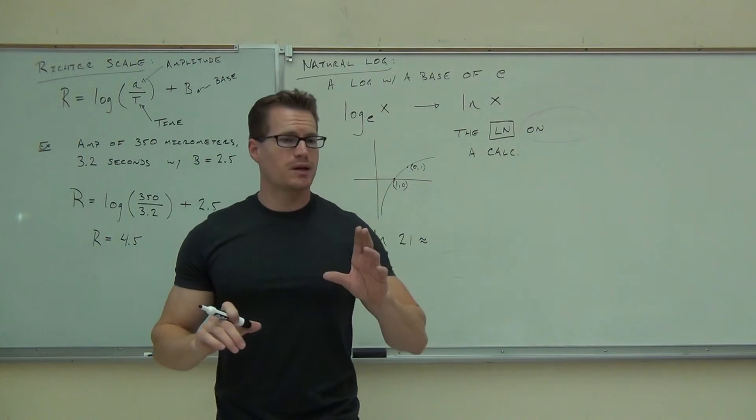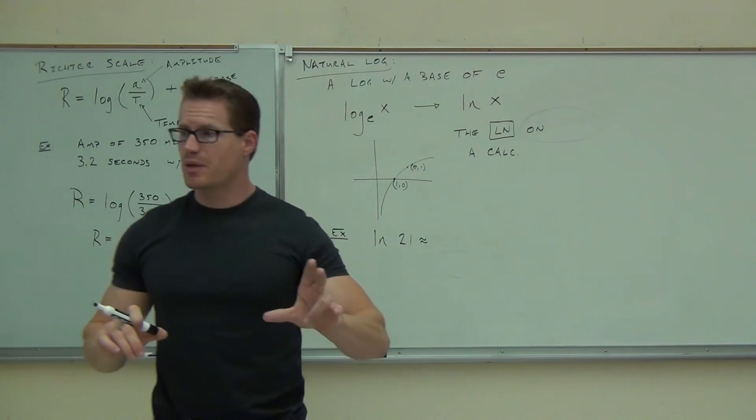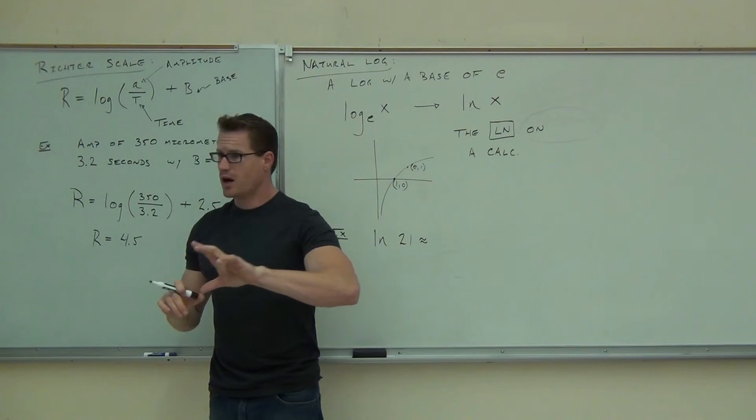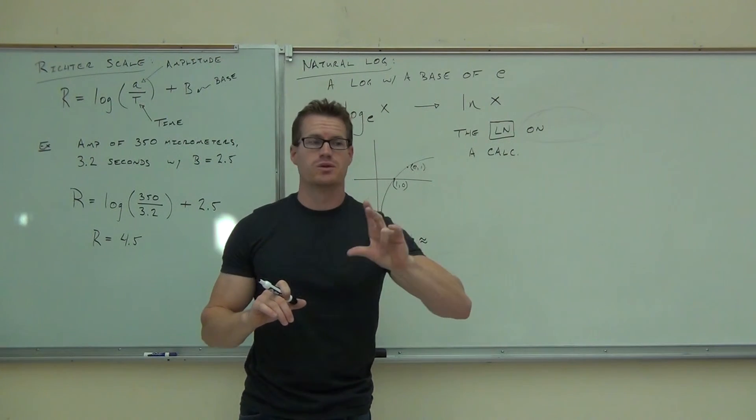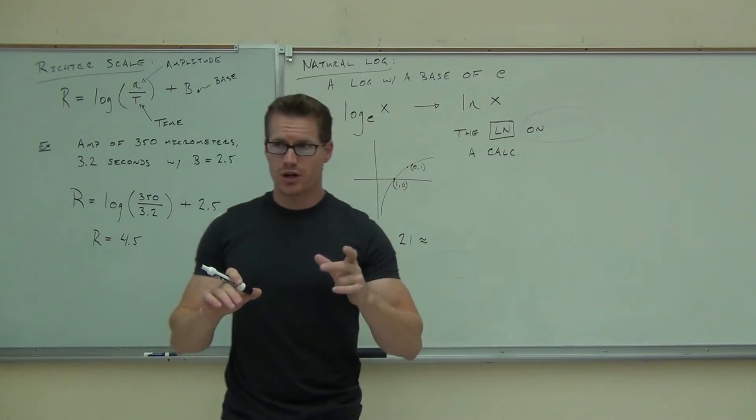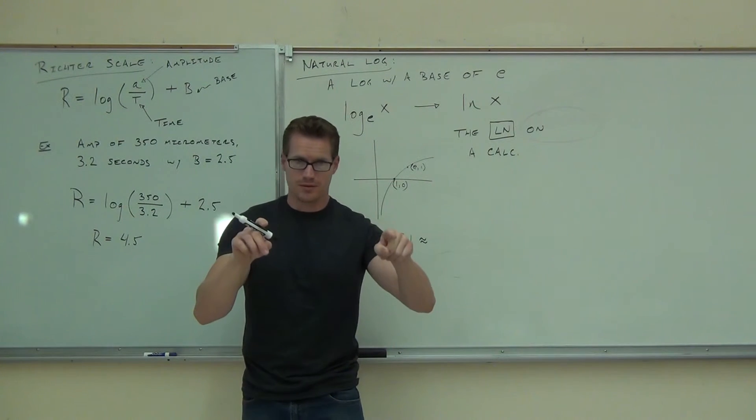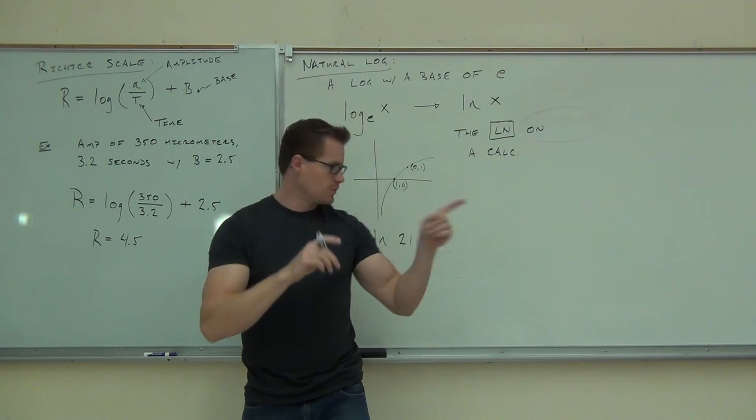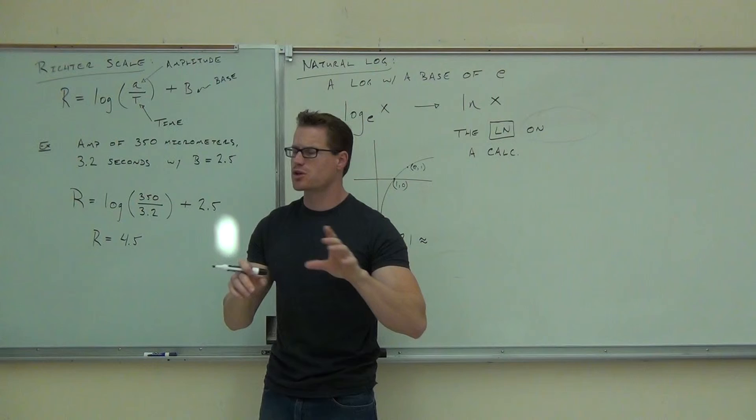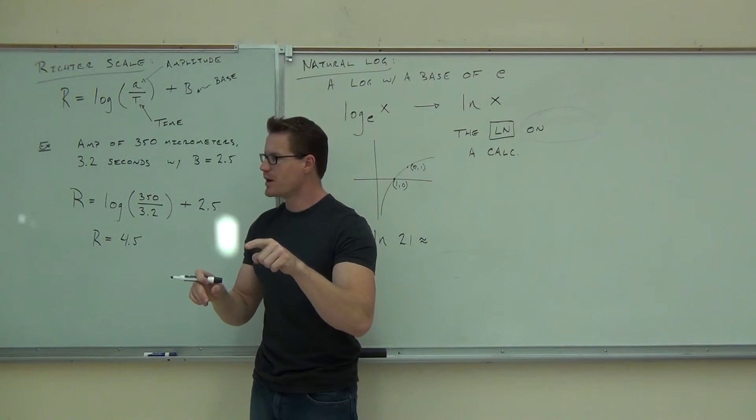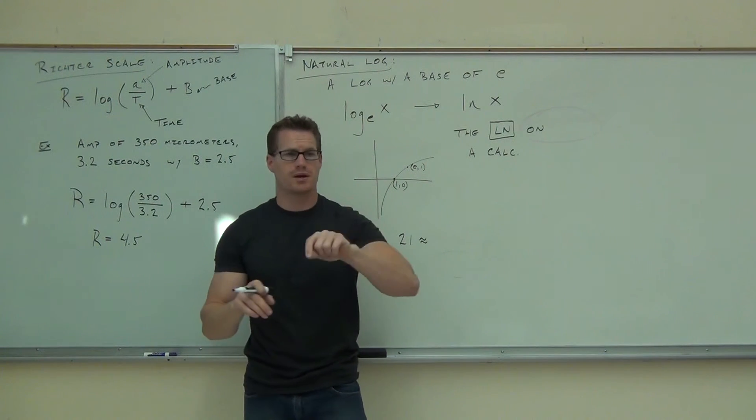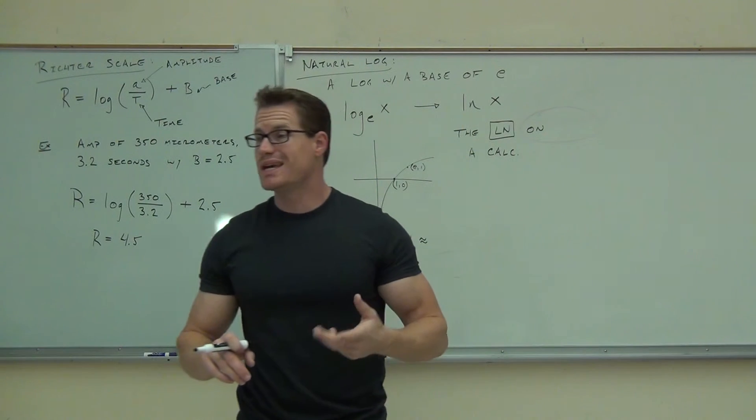Let's do LN now of 21. So again, on your calculator, if you had to plug in the log first, then the number, that's the same thing you're going to do with your LN. If not, if you had to plug in the number first and then the log, that's what you're going to do with your LN. However, are you going to press the log button or the LN button? Because we're talking about LN. We're talking about a base of E. So press 21, then your LN button, or the LN button, then 21, depending on what calculator you have. What did you get?